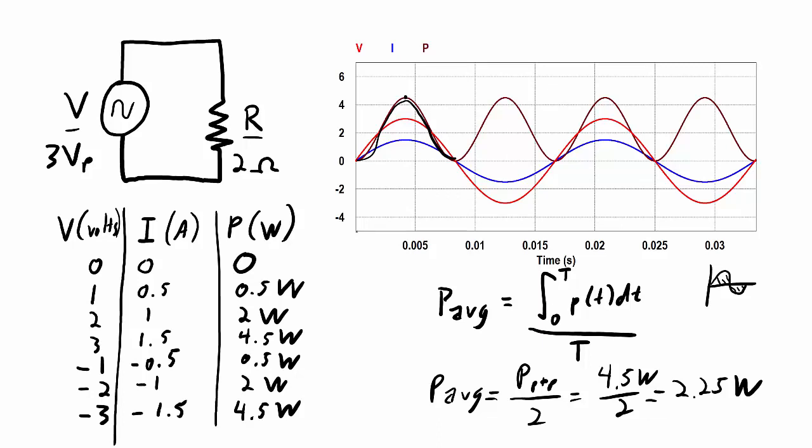I do have another video on RMS, or root mean square voltages, which shows another way that average power can be calculated based on the root mean square voltages and currents. However, I just want you to get an intuitive sense from looking at the graph of voltage, current, and power, how the power can be determined from this graph.